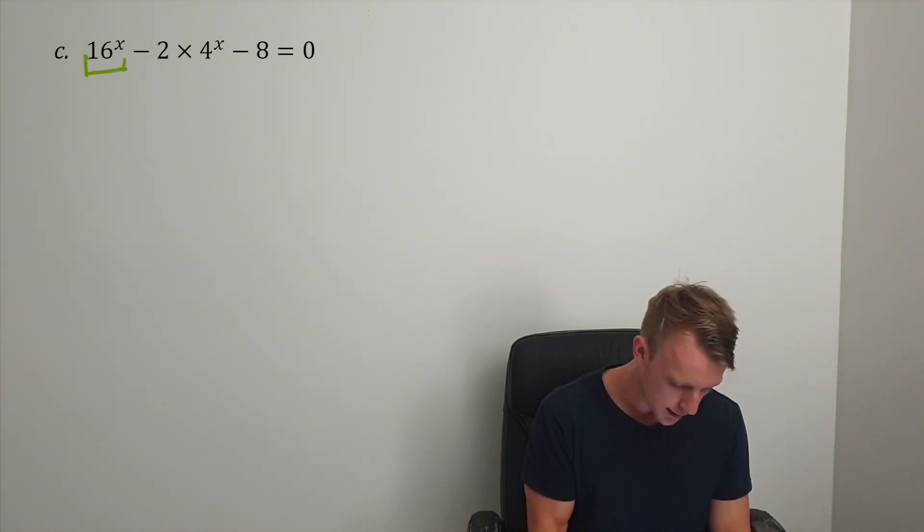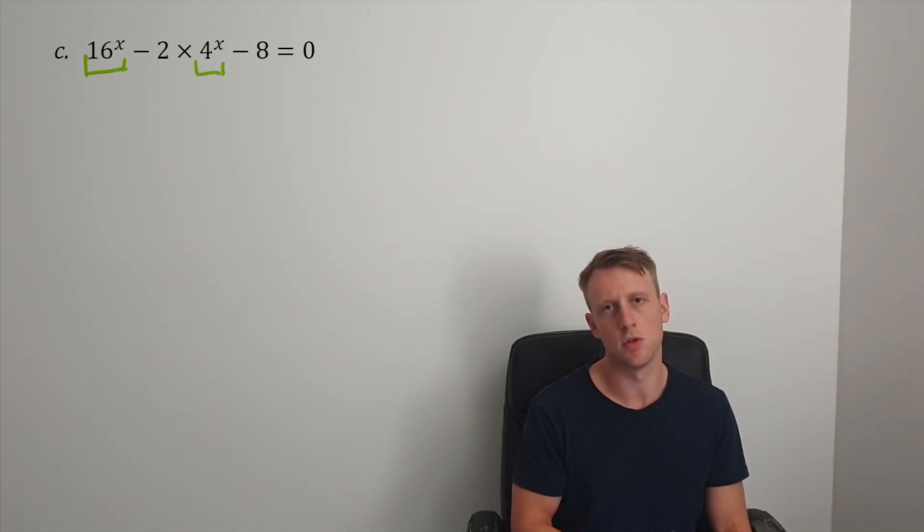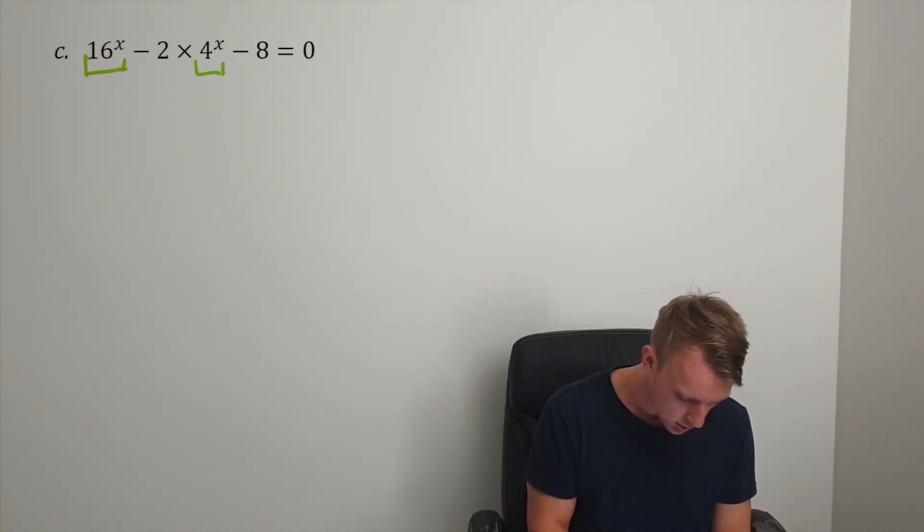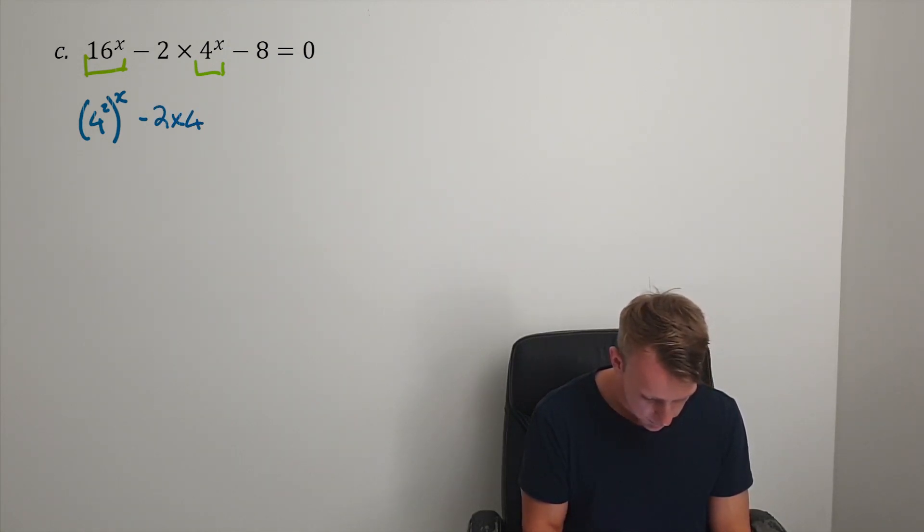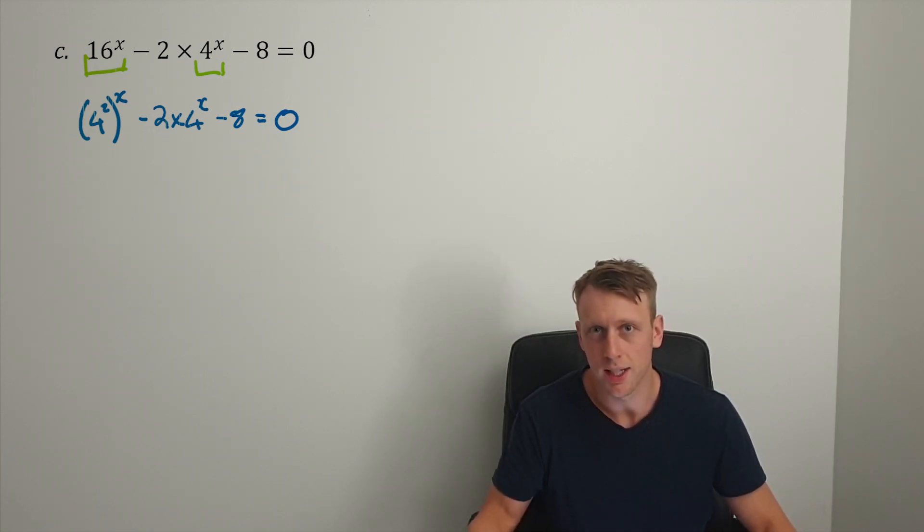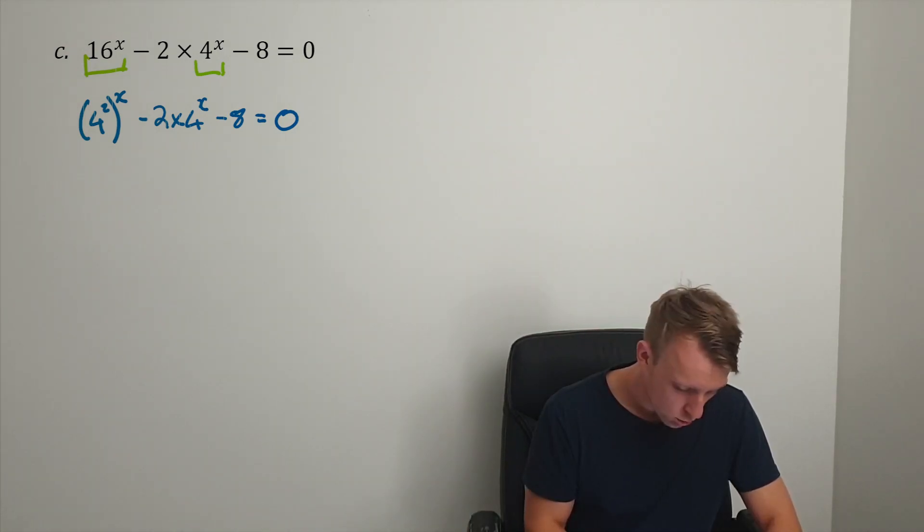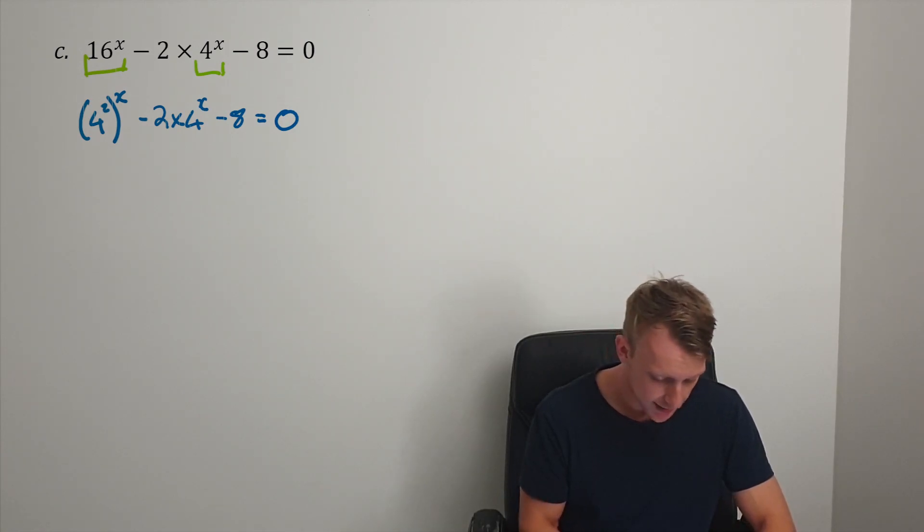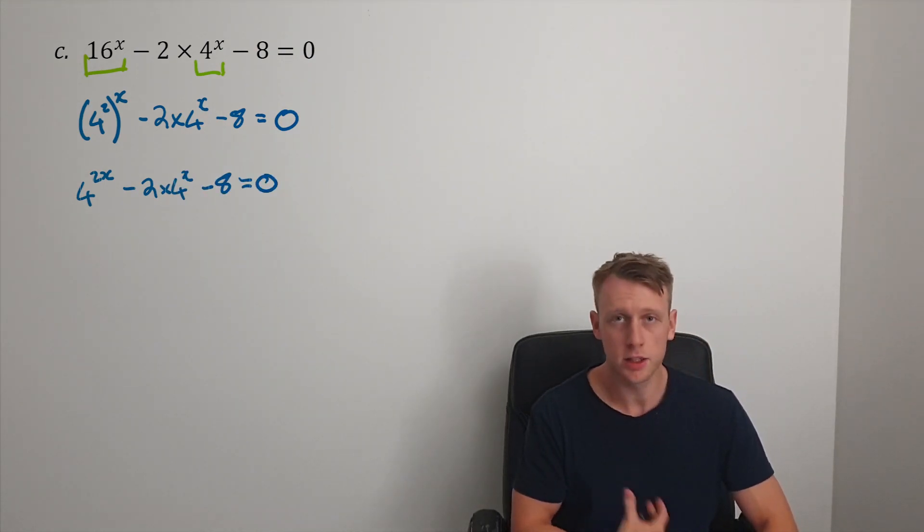Then we get to a question like this. First, 16^x and 4^x are my only two terms raised to the power of x, so I'm going to write this as 4^(2x), because 16 is 4 squared. Not immediately obvious how we're going to solve this equal to zero. We've got 4^(2x) - 2×4^x - 8 = 0.